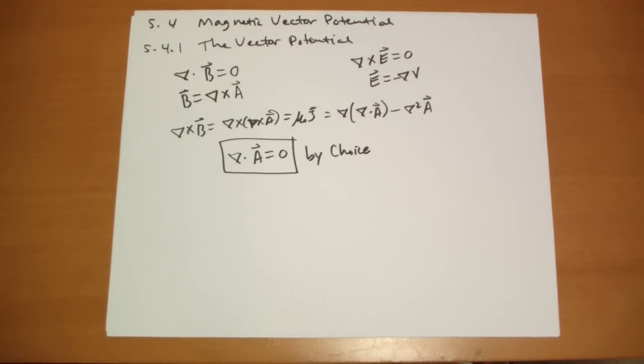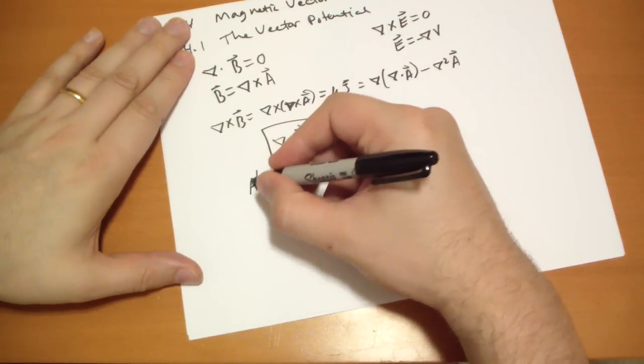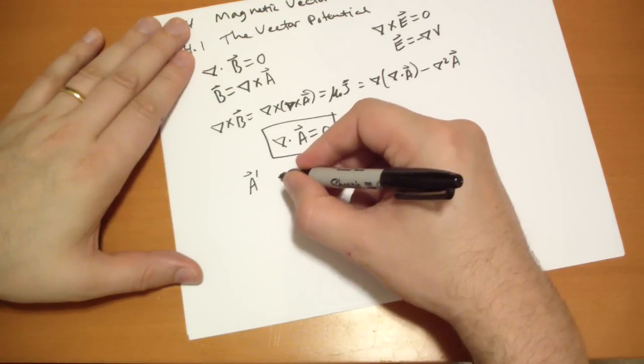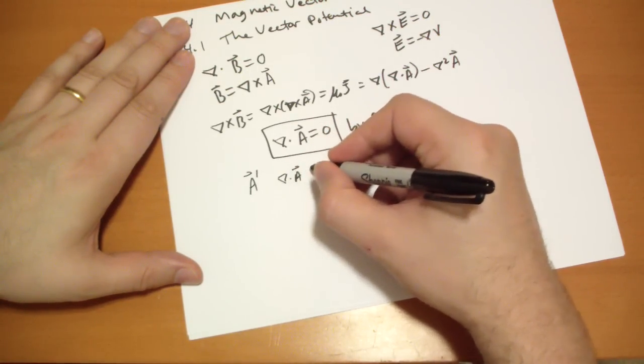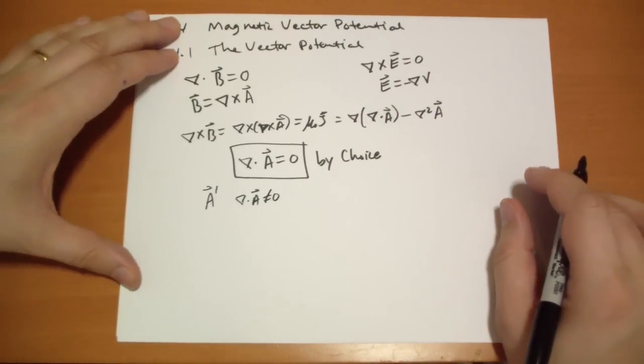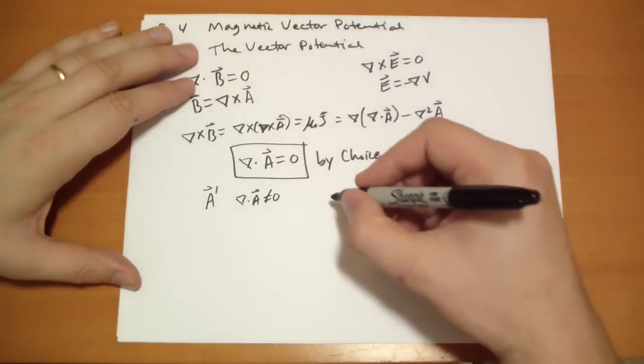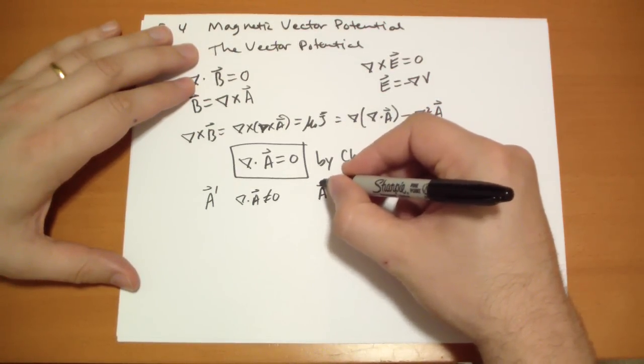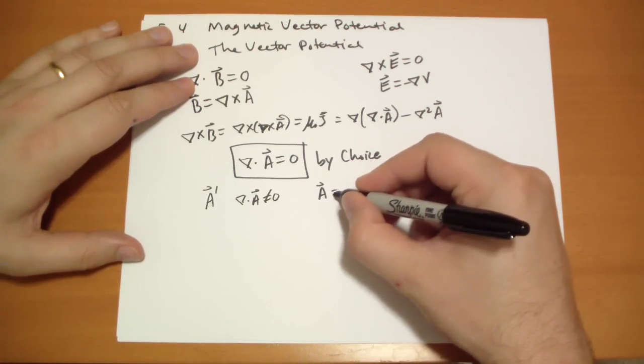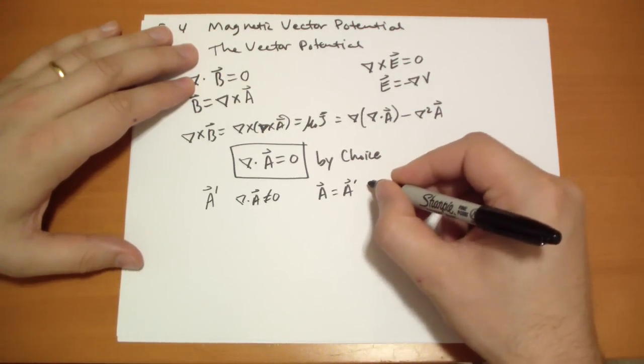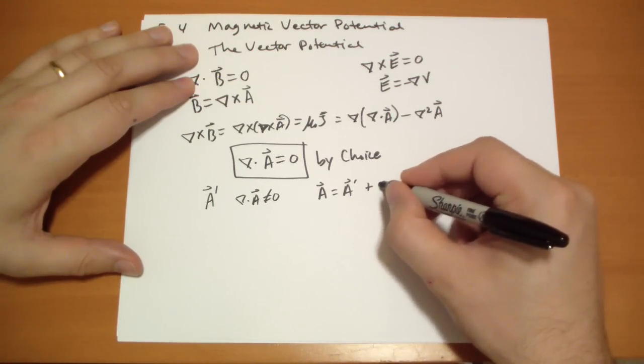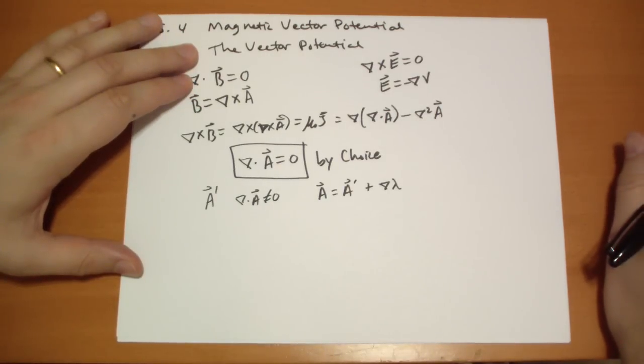And the reason why we get to choose that to be zero is, let's suppose that somebody says, we want to use A prime vector, where the divergence of A prime vector is not equal to zero. Well, what we can do is, we can say, instead of that A prime vector that you had, that was nice, we're going to use this A vector, that's equal to A prime vector, plus the gradient of some scalar field.